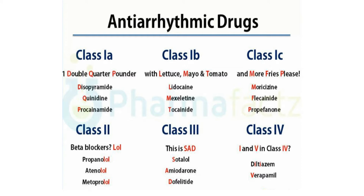Essentially, it's divided into five classes: one, two, three, four, and five. Class one is subdivided into A, B, and C. These are all sodium channel blockers. Class 1A actually prolongs the action potential. To remember, we have 'double quarter pounder' as a mnemonic: disopyramide, quinidine, and procainamide.